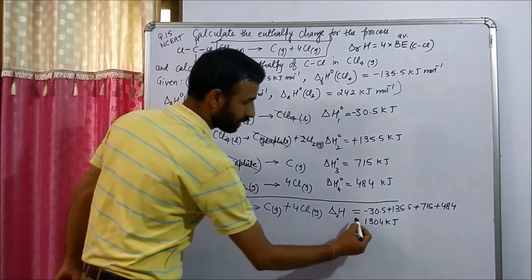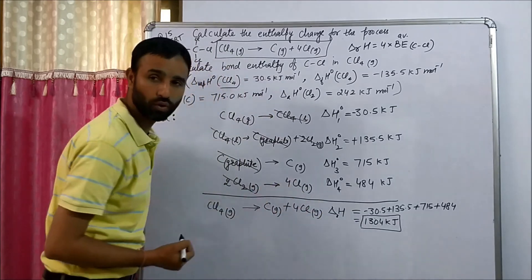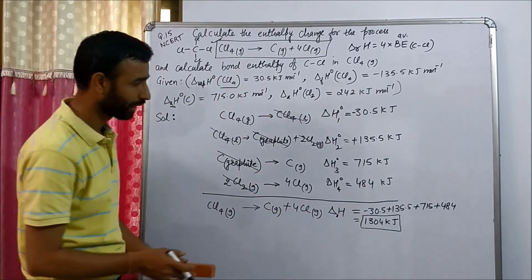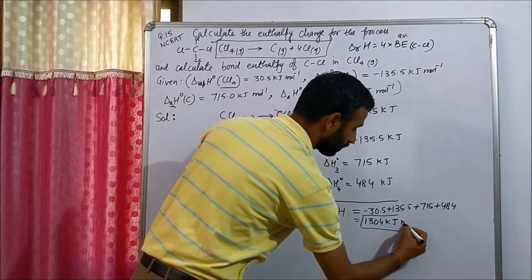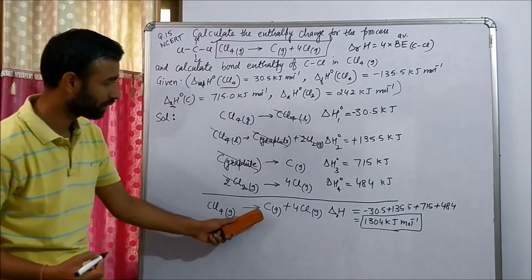So enthalpy change for this process has value 1304 kilojoules per mole. Because it is enthalpy change, so it is this much kilojoule per mole.